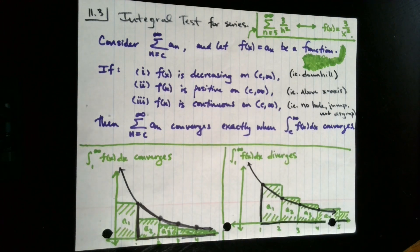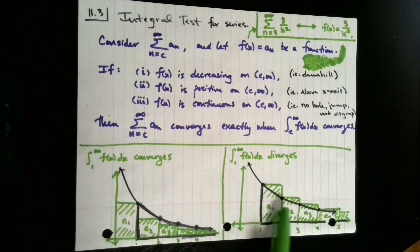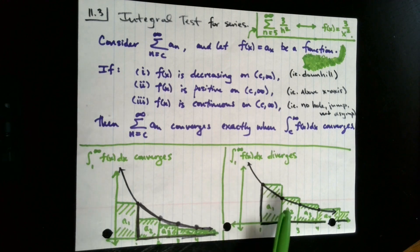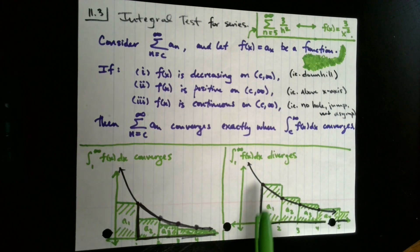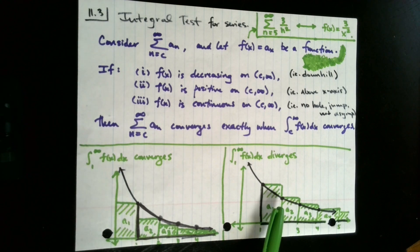So the integral test says: if the function associated with the terms of your series is decreasing, positive, and continuous, then you can look at the integral associated with your function to determine if your series converges — which is actually pretty cool. For justification, I've got a couple of pictures that will supply some logic for the facts stated above. Let's start by looking at the picture on the right. Note that this function is decreasing, the function is north of the x-axis throughout, and it appears to be free of holes, jumps, and vertical asymptotes on the interval of interest — from 1 to infinity.